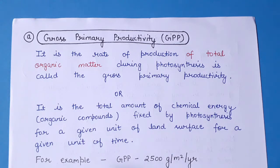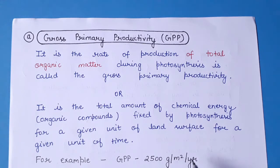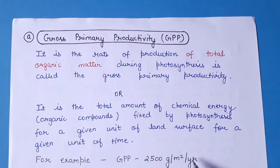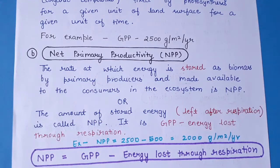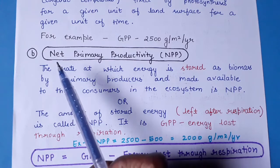For example, the gross primary productivity can be 2500 grams per meter square per year. So GPP is expressed as mass per unit area per time. Coming to our next category: net primary productivity (NPP).